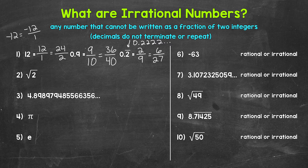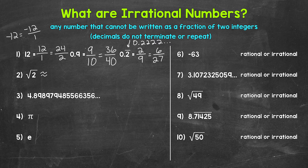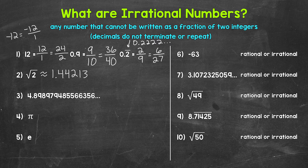Let's move on to irrational numbers, and we will start with the square root of 2. The square root of 2 is approximately — and I say approximately because this decimal does not terminate or repeat, so we can't write out the full decimal. The square root of 2 is approximately 1.44213562, and this continues on. It does not terminate or repeat, so this is irrational.